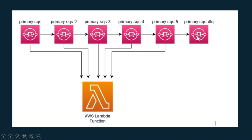After a certain number of retries, we put the message in a final DLQ where manual intervention is required. We can set up an alerting mechanism so that whenever a message count in this DLQ reaches a threshold, the user knows to come and check those messages. In this strategy, you don't need to do any code changes to the Lambda function.